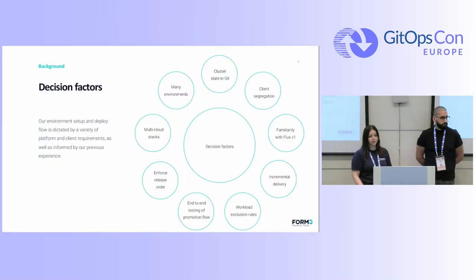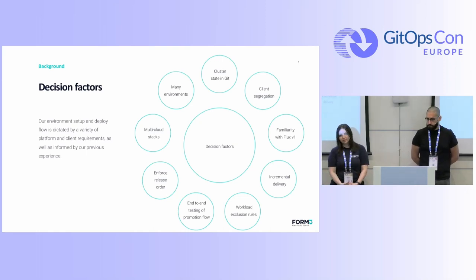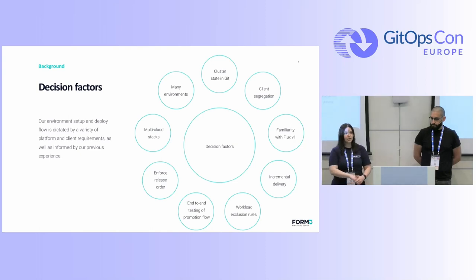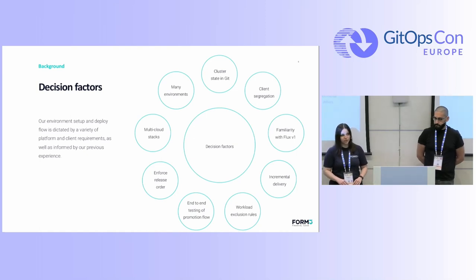Let's look into some of the decision factors that have shaped our solution. We had familiarity with Flux V1 and liked the toolkit approach of V2, so our tooling teams immediately wanted to build with Flux. Our platform has a requirement to deploy on multi-cloud, so our teams are building multi-cloud stacks, and we needed something that would work for the multi-cloud project. We also wanted to build a simple solution and then iterate on it.